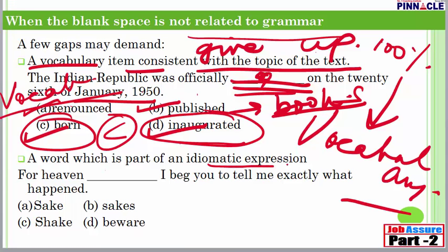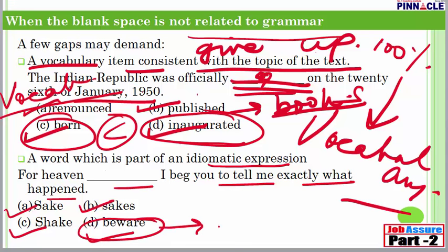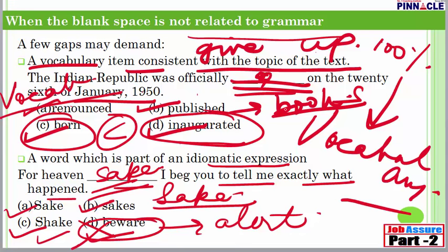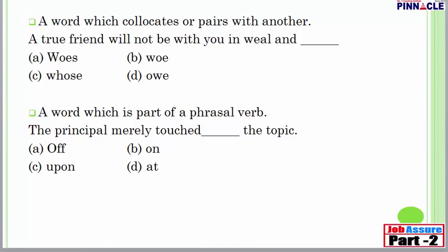Sometimes certain words in the blank space are part of an idiomatic expression. For example: 'For heaven ___, I beg you to tell me exactly what happened.' Options: 'sake,' 'sakes,' 'shake,' or 'beware.' 'Beware' means to be alert — this is eliminated first. 'Shake' means to tremble. 'For heaven's sake' is the idiomatic expression used when asking someone to do something earnestly. So 'sake' (s-a-k-e) is the correct answer. You need knowledge of idioms and phrases to solve these.